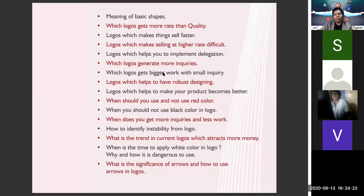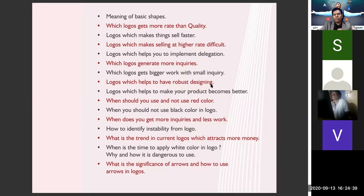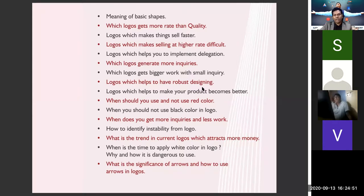There are industries for which you need to suggest this specific type of logo, because it will always work for them. Then there are logos which help with robust designing. For example, in manufacturing, if you want your machines to be very strong and reliable — this is the kind of logo to go for. Clients will never complain; they will always say your machine is good.